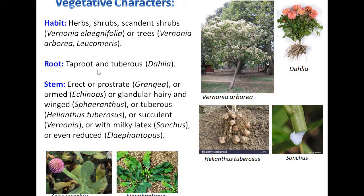The root system: taproot is most common in family Asteraceae, but tuberous roots are also observed in genus Dahlia. The stem is erect, prostrate in Gnaphalium, armed in some, glandular, hairy, and winged in Pteranthus. The stem is tuberous in Helianthus tuberosus, succulent in Portulaca, and with milky latex in Sonchus. The stem is reduced in Elephantopus.